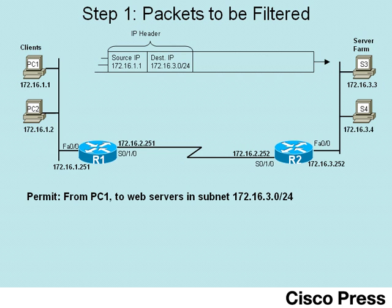Next consider what happens from a port number perspective. The client will use a port number bigger than 1023 and connect to the web server's well-known port of 80. So in the TCP header, we'll see some number bigger than 1023 as a source port and destination port 80. Our access list statement will need to match all four pieces of information in that packet header and use a permit action.